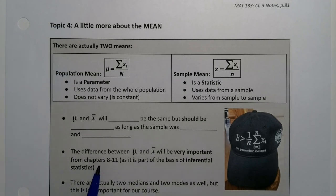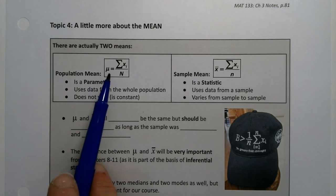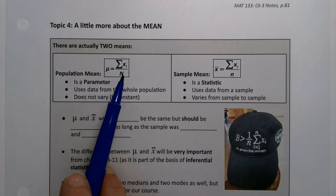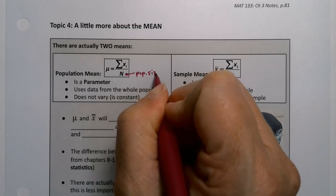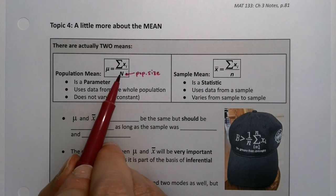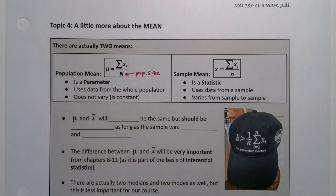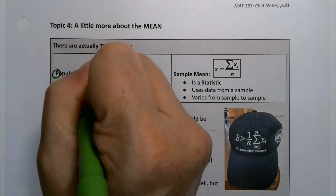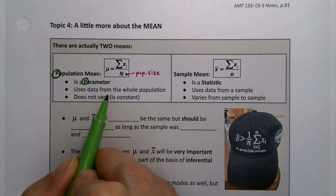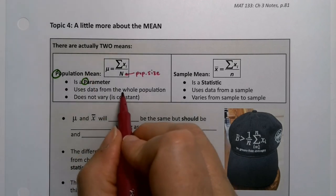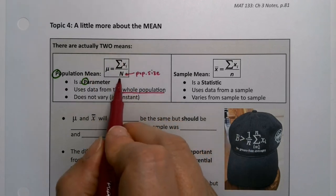There are actually two means. There's a population mean which has this symbol, the Greek letter mu. M-u is how you write it in English. Mu, which is the sum of all the data points divided by the population size. So capital N right there is your population size. Add up everybody in your population, divide by how many there are in the population, and you'll know your mu. It's a parameter. A parameter is a measure of a population. It's constant. There is just some value out there in the world that is the population value. It uses the whole population.